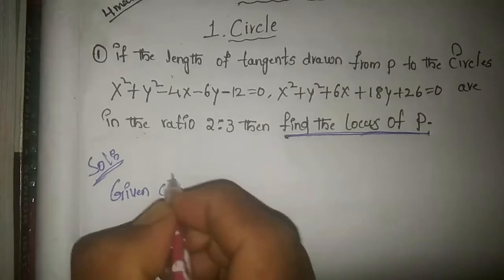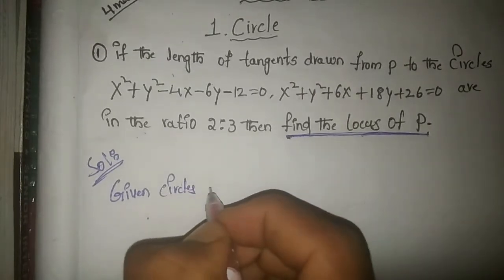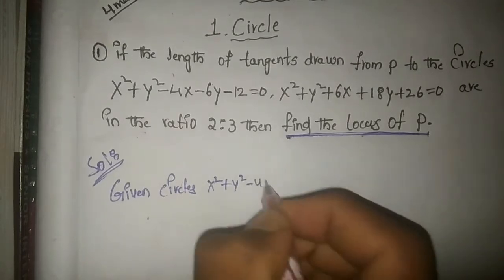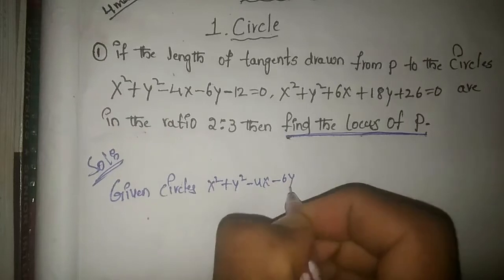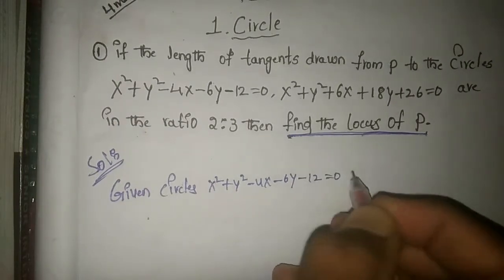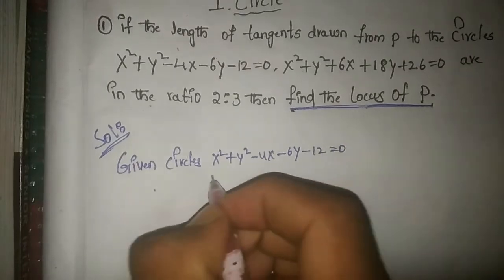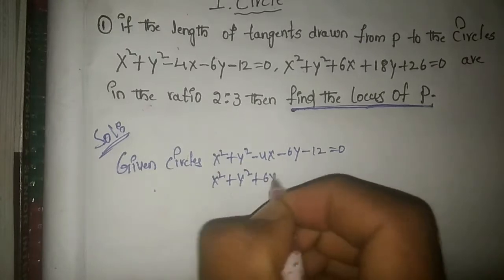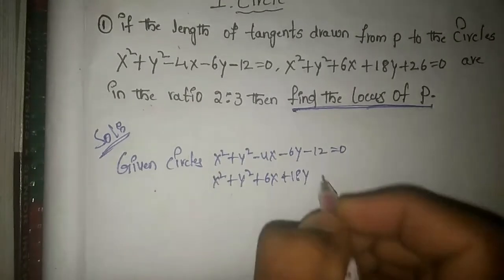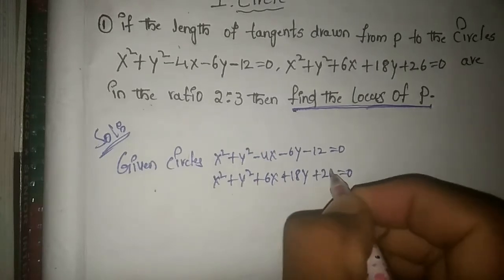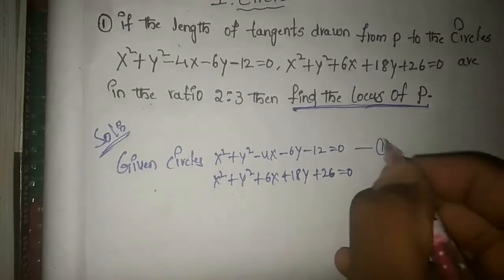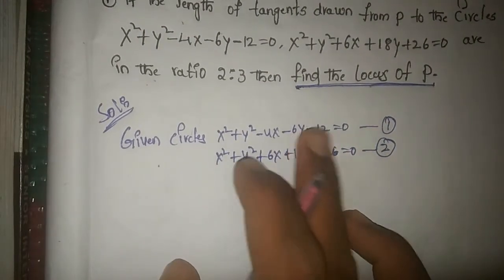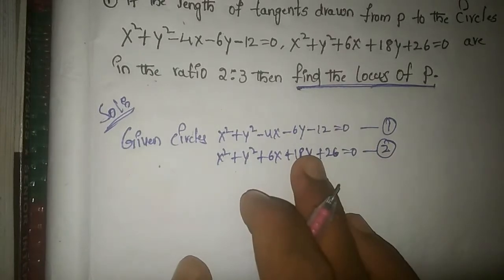The given circles are: first circle — x² + y² - 4x - 6y - 12 = 0, and second circle — x² + y² + 6x + 18y + 26 = 0. This is the first circle and this is the second circle.